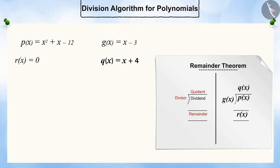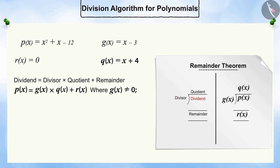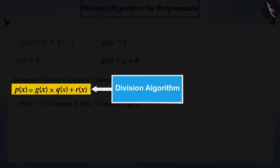Here, the part on the right can also be written this way. This division process is similar to Euclid's division algorithm, according to which, p(x) will be equal to g(x) times q(x) plus r(x), where g(x) will not be equal to 0, and r(x) will be 0 or the degree of r(x) will be less than the degree of g(x). This conclusion is called the division algorithm for polynomials.